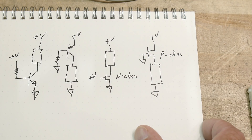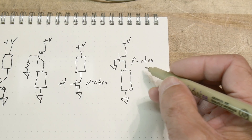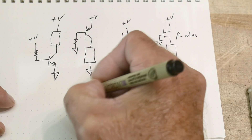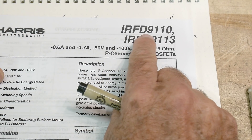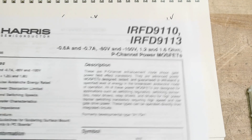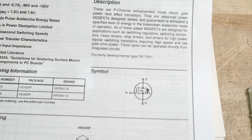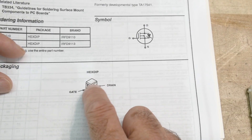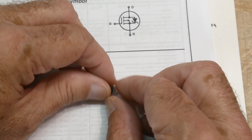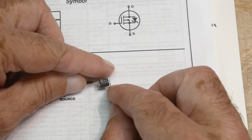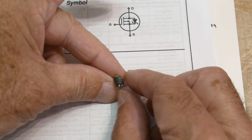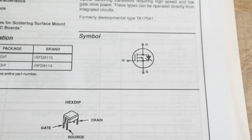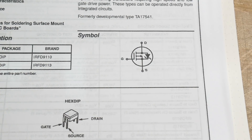A lot of people are familiar with N-channels but maybe haven't had a chance to play with a P-channel, so today's chip of the day is the IRFD9110. This particular one was made by Harris — the original was probably from International Rectifier, but this is a better copy of the datasheet. It's in a funny little package: a 4-pin DIP package that's kind of narrow. If you ran across it, you'd immediately say 'that's an optocoupler' because of the similar package size, but this is a P-channel FET.